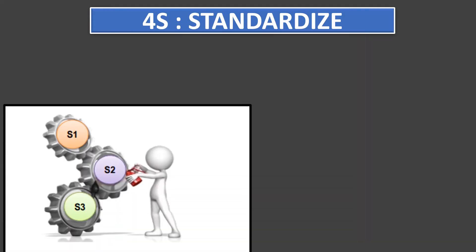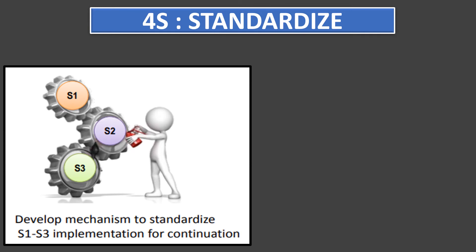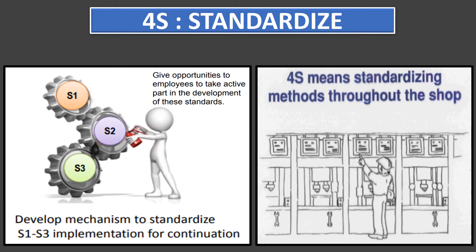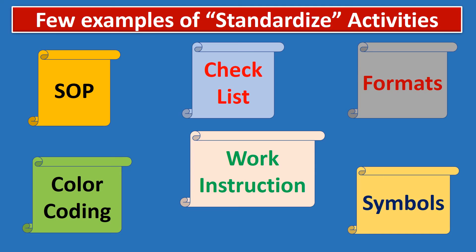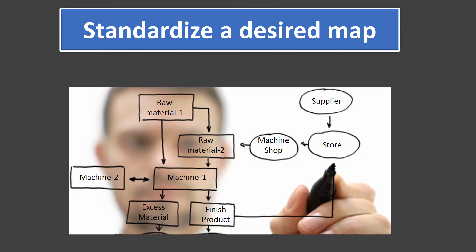Now 4S, that is standardize. Whatever has been done in 1S, 2S, and 3S should be continued. If any standardization is done on one machine, the same should be continued on other machines. Examples of standardized activities include SOPs, checklists, formats, color coding, symbols, etc. If you are a zone leader, you need to standardize a desired map of your workplace — that means defining where things should be kept. You should have a proper map and keep those items in that designated place only.